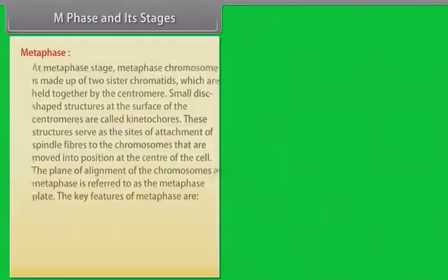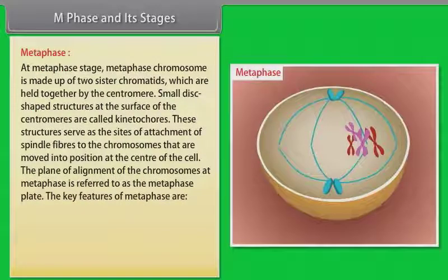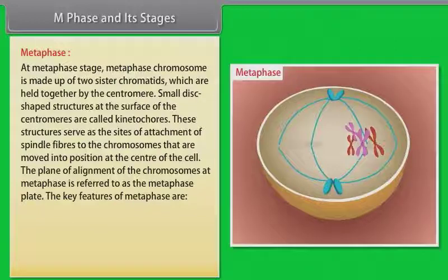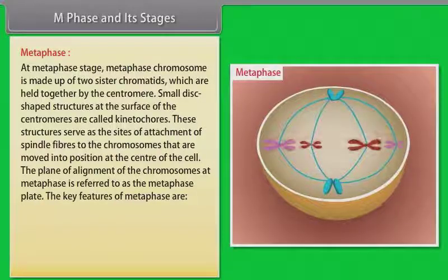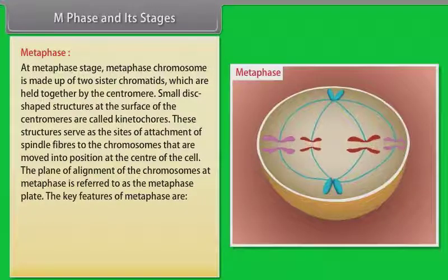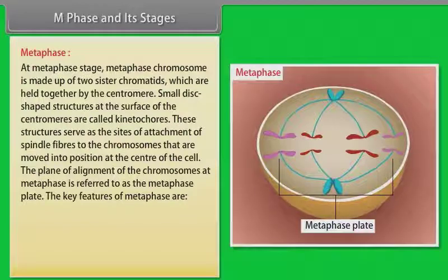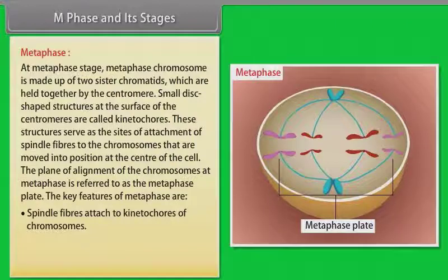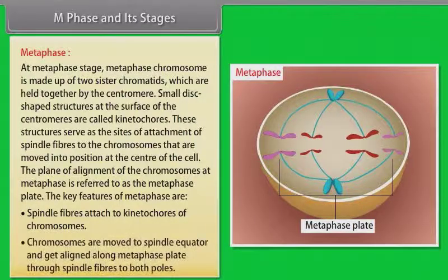The second stage of mitosis is called metaphase. At this stage, metaphase chromosome is made up of two sister chromatids which are held together by the centromere. Small disc-shaped structures at the surface of the centromeres are called kinetochores. These structures serve as the sites of attachment of spindle fibers to the chromosomes that are moved into position at the center of the cell. The plane of alignment of the chromosomes at metaphase is referred to as the metaphase plate.